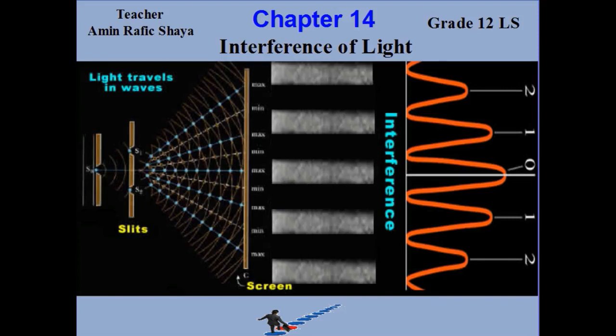Chapter 14: Interference of Light. Before we start with interference of light, we will recall the concept of superposition of waves.